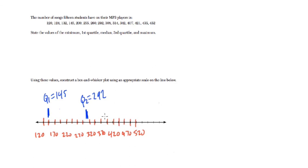Q3 is 407. So here's 390. 407 is about right here. Q3 equals 407.